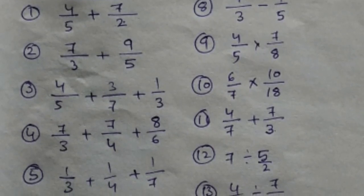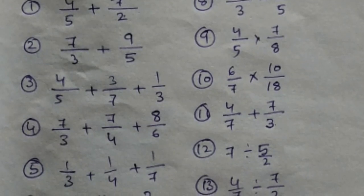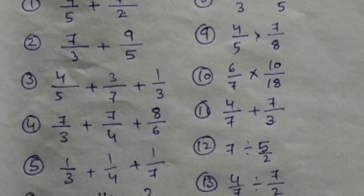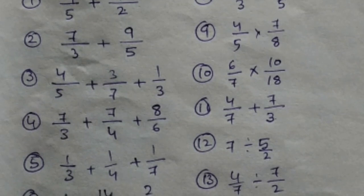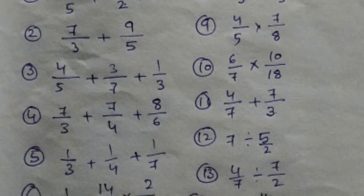Number 4: 7 by 3 plus 7 by 4 plus 8 by 6. Number 5: 1 by 3 plus 1 by 4 plus 1 by 7. Number 6: 1 by 3 into 14 by 6 into 2 by 3. Number 7: 9 by 2 minus 1 by 7.